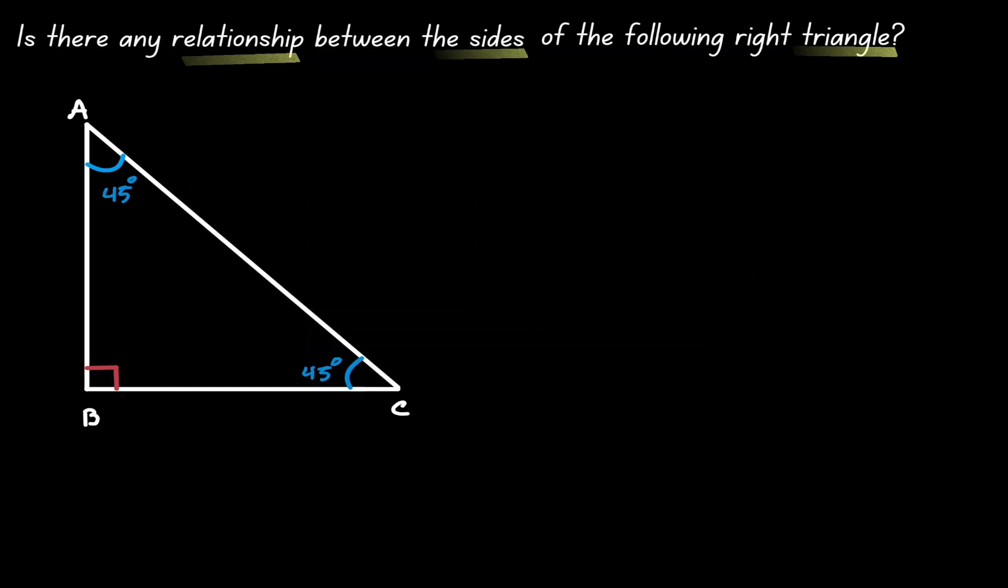The first thing to notice is that we have an isosceles triangle. We have two angles of the same measurement, 45 degrees, then we can claim that their opposite sides are congruent to each other.